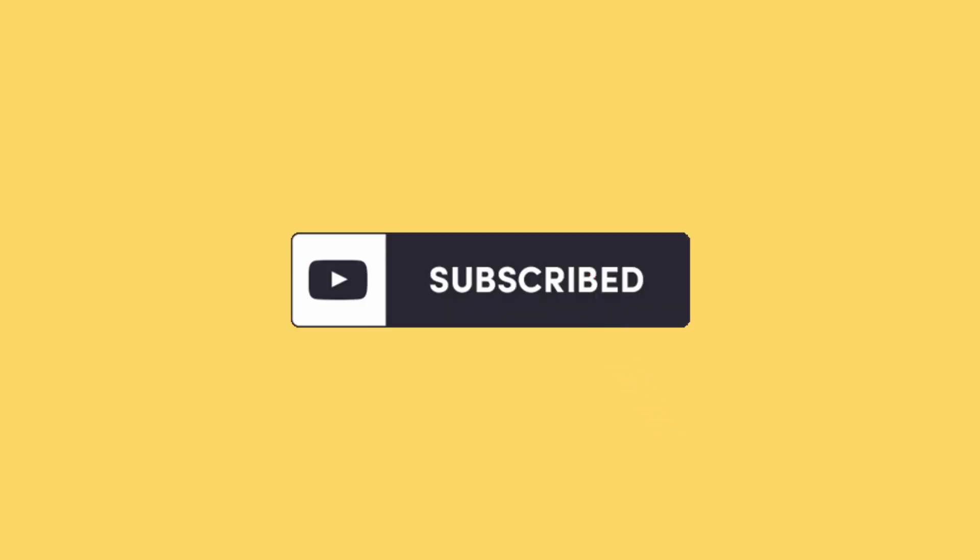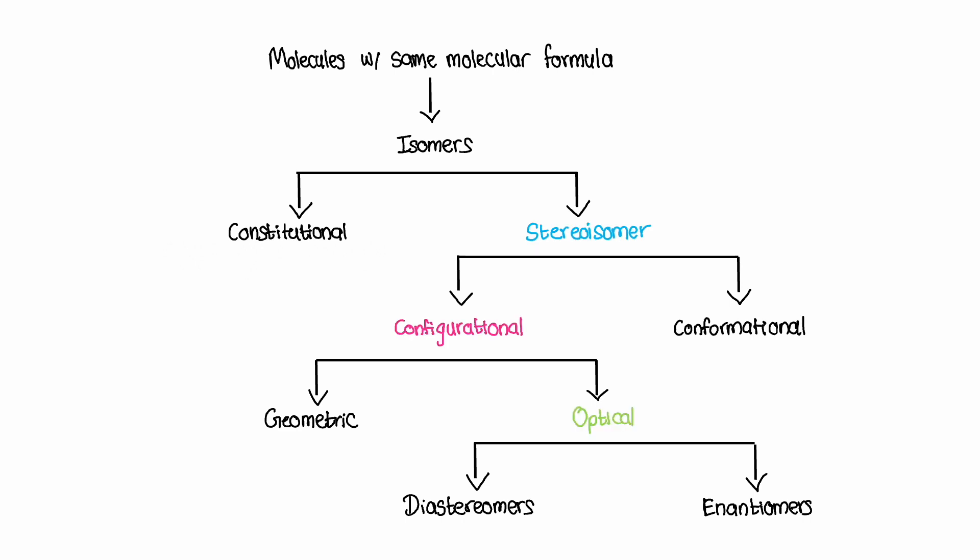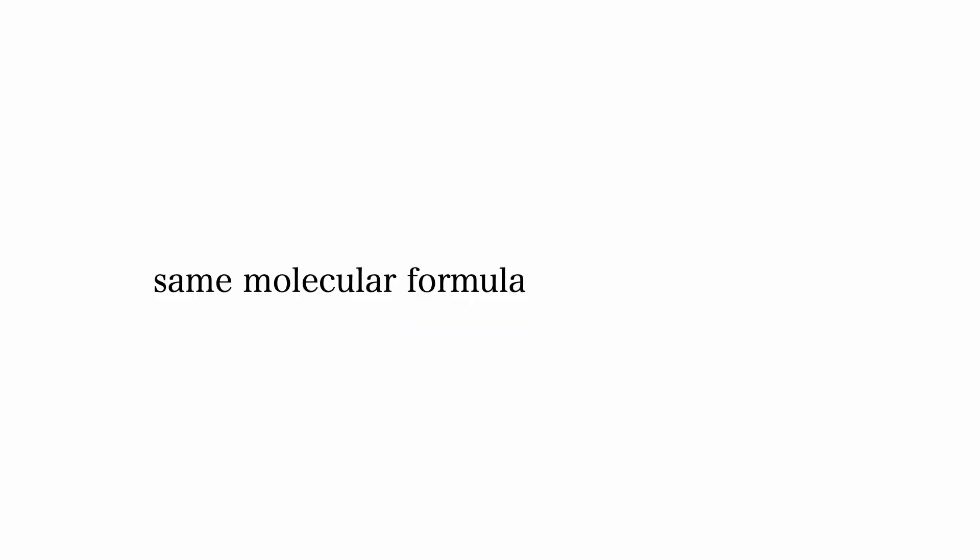Okay, let's get to the video. Enantiomers are a type of stereoisomer. This means that they are molecules with the same molecular formula and connectivity of atoms but differ in their three-dimensional arrangement.